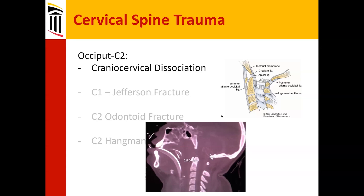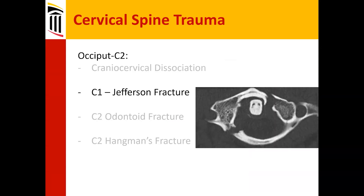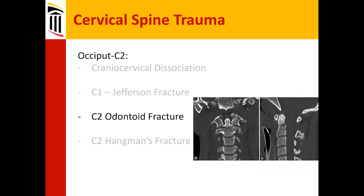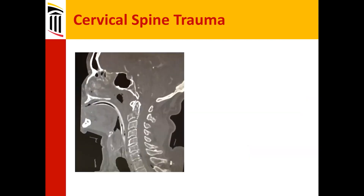C1 Jefferson fracture, as mentioned, is again due to axial loading exploding the ring of C1. Here is a pretty brutal C2 dens type 2 fracture — it's actually pretty well aligned. You could treat this either through an odontoid screw or posteriorly by posterior fusion.